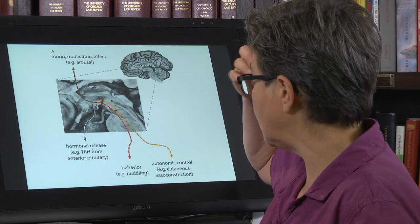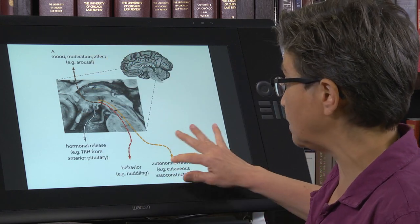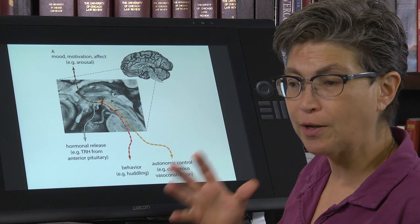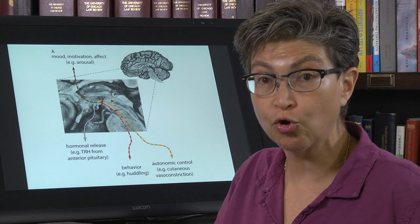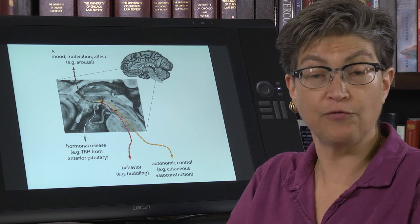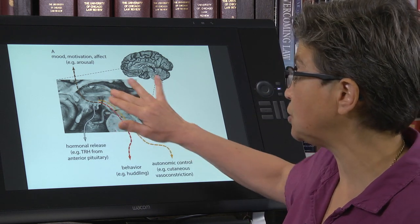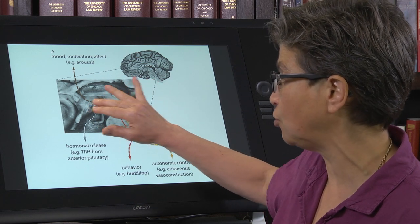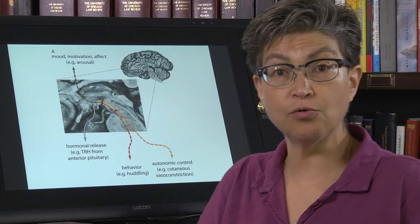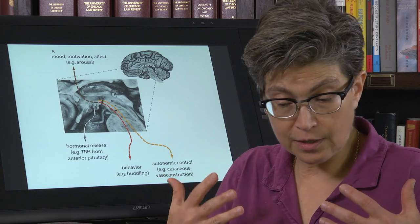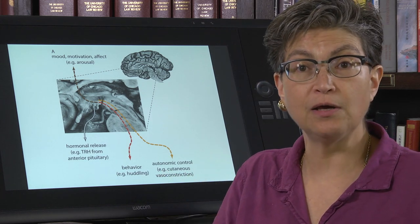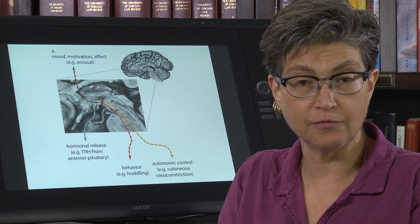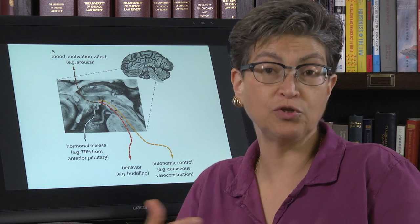The hypothalamus can change your autonomic or automatic control. For example, thermoregulation has its master control in the hypothalamus. If the individual is cold, there will be vasoconstriction of the cutaneous vessels, whereas if the individual is hot, there will be sweating.